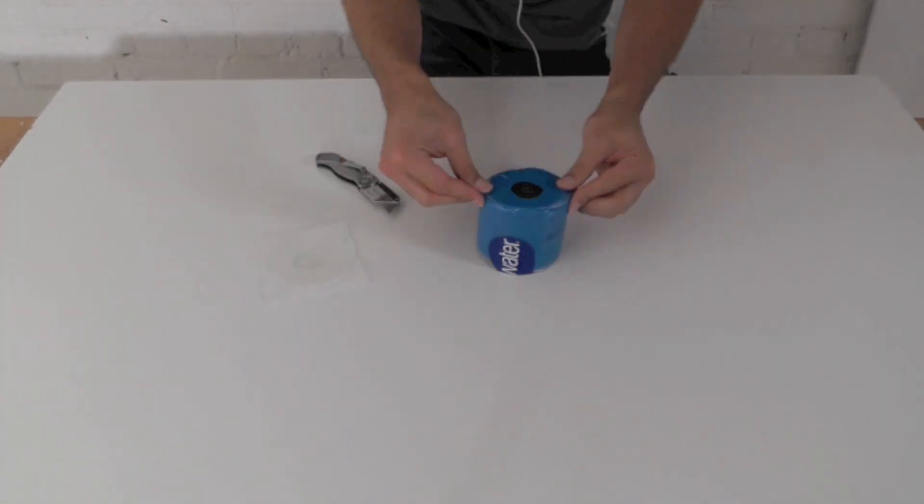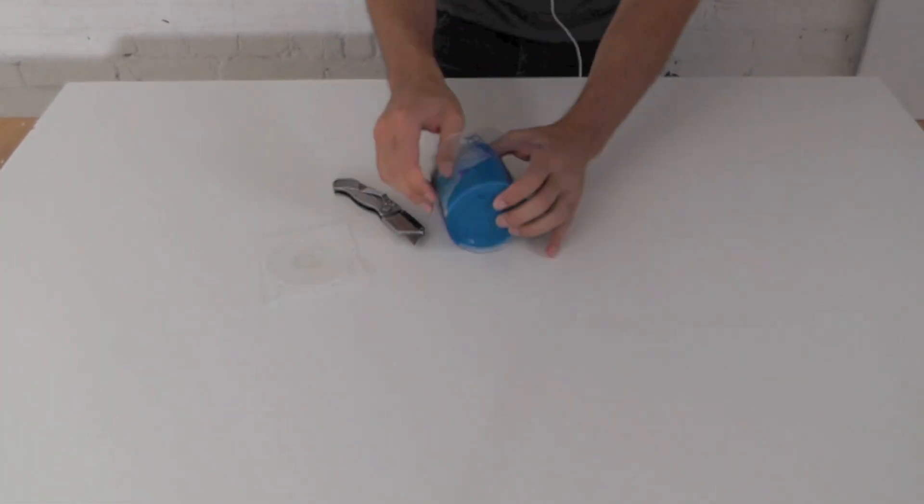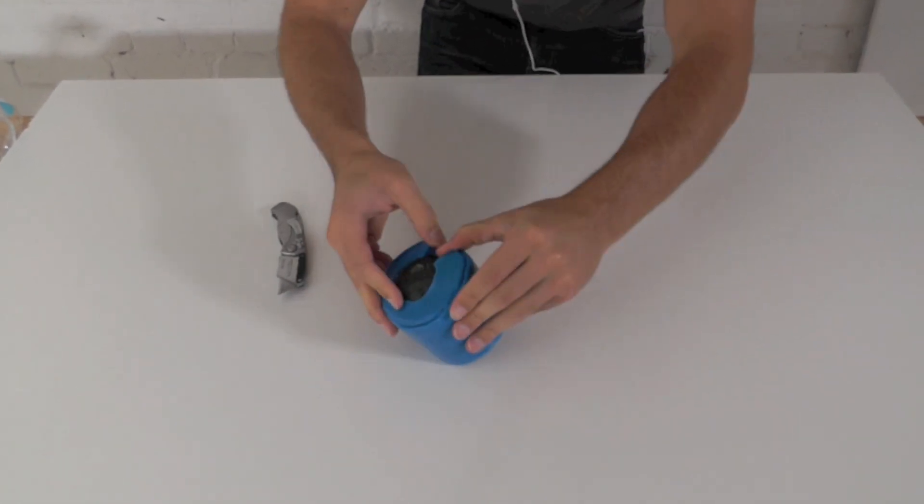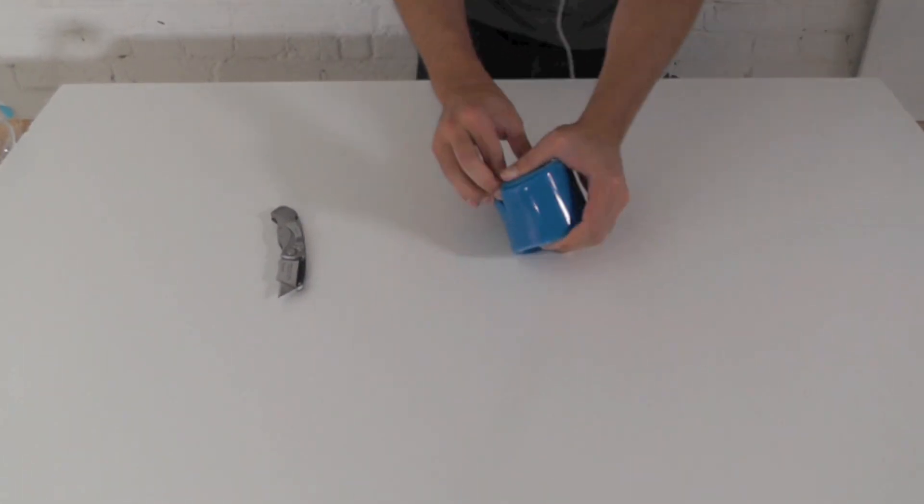Once the silicone is cured, you can cut away the plastic and gently remove the original object. You may have to cut the mold a little bit to get it out.